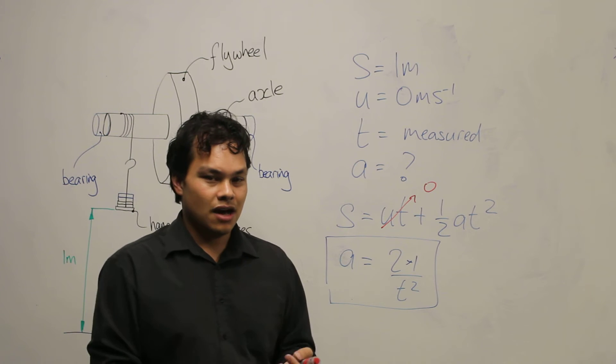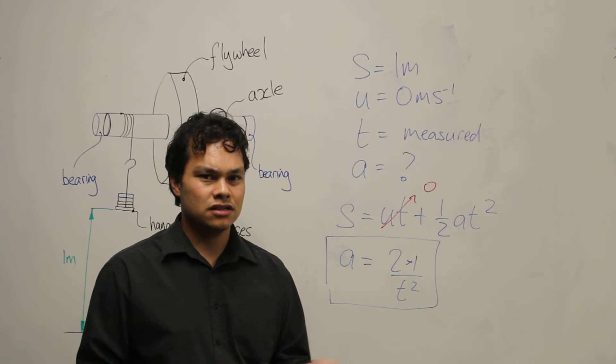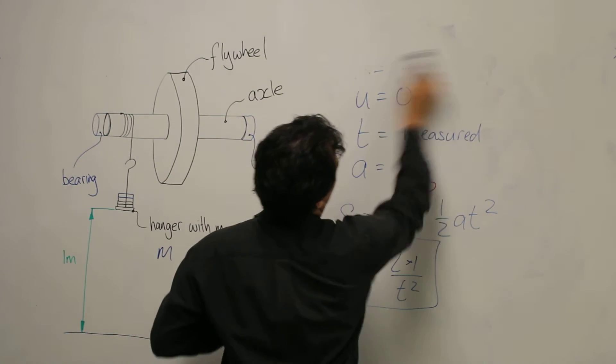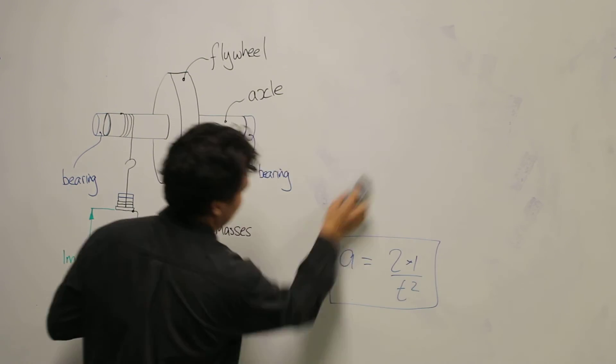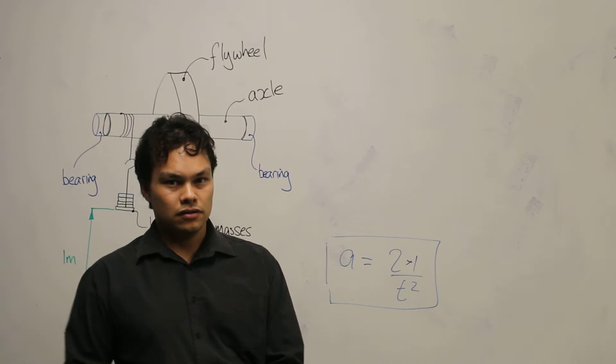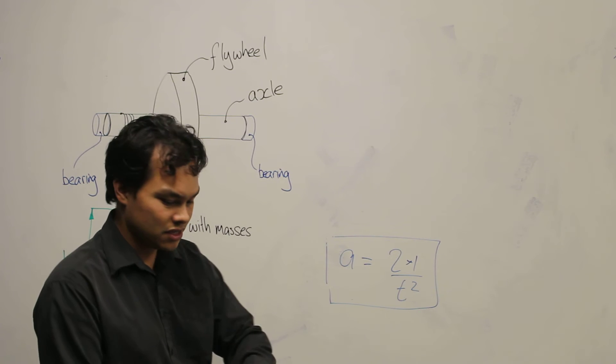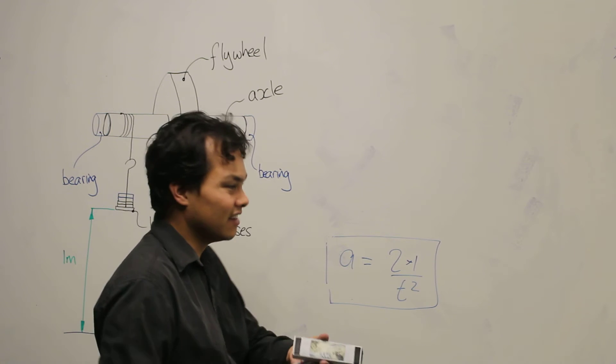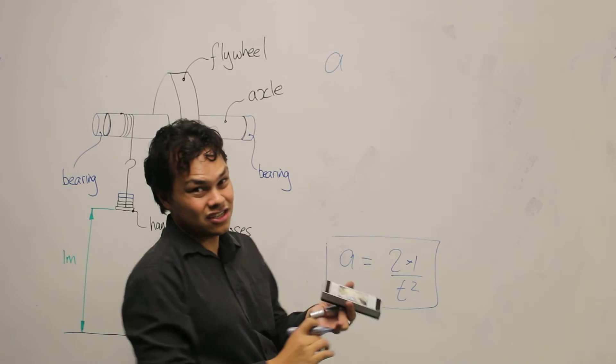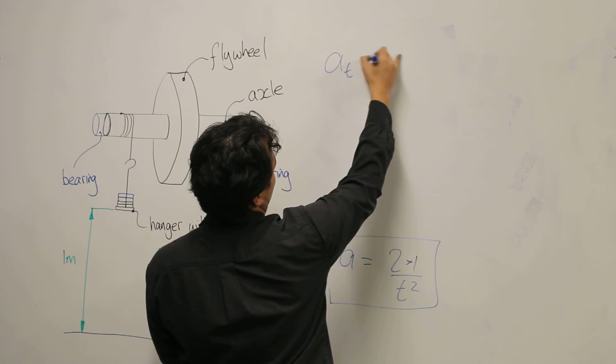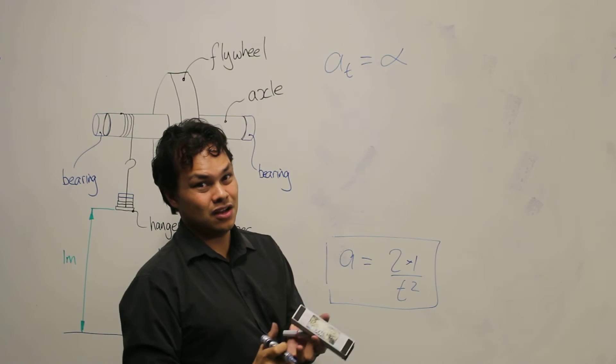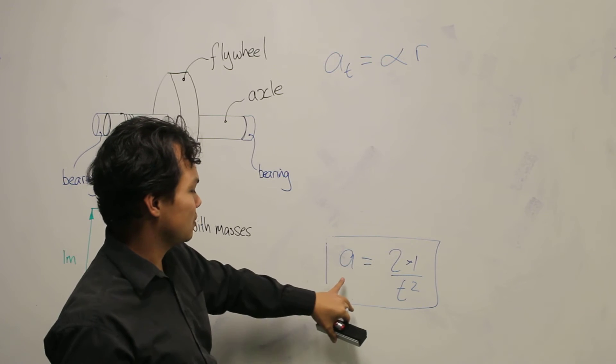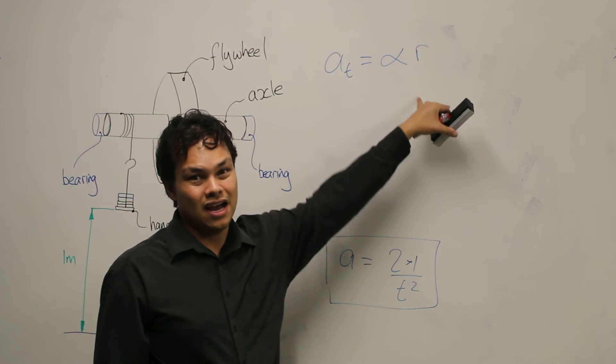So our next step now is to use the tangential acceleration to calculate the angular acceleration. So previously we've introduced this equation, the relationship between angular acceleration and linear acceleration. And that is acceleration equal to angular acceleration times the value R, which is the radial distance. We can substitute A into this equation and we know the value of R to find alpha.